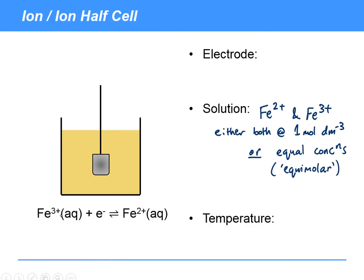Equimolar solutions are sufficient in these ion/ion half cells. Again, neither of these is a conductor, so we're going to need a platinum electrode, with this porous platinum at the bottom, the platinum black. Usually it's sufficient to say a platinum electrode, and the platinum black is assumed. And finally, 298 K temperature as before.